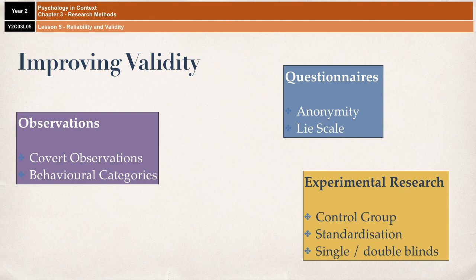Moving on to observational research: observations very often produce findings that have quite high ecological validity, as there may be minimal intervention by the researcher. That's especially the case in covert observations where the observer remains undetected, meaning the behaviour of those being observed is more likely to be natural and authentic. Behavioural categories also matter — if they are too broad, overlap, or are ambiguous, that could negatively impact the validity of data collected. Behavioural categories must be properly operationalized before starting any observational research.